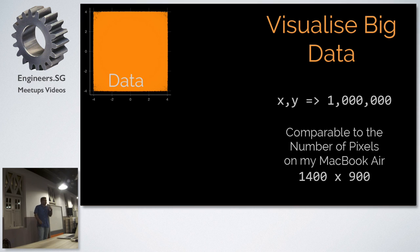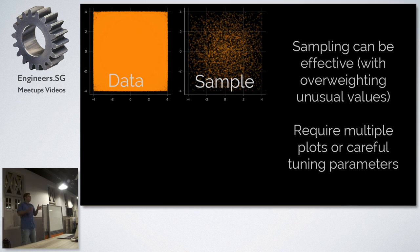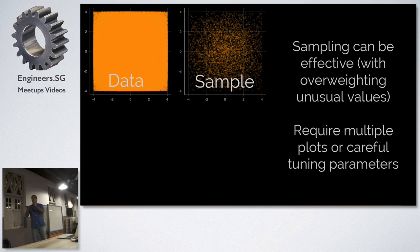So what can I do? Sampling. Sampling is the first option — you can obviously sample it. As long as you're sampling with some care, making sure you're not over-weighting for unusual values and not losing context, you can sample and plot it.